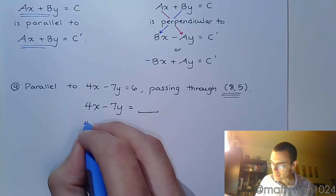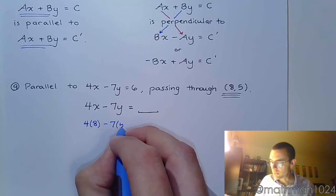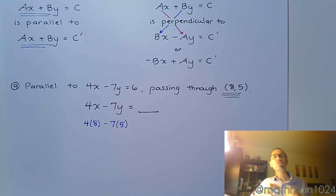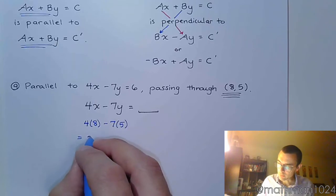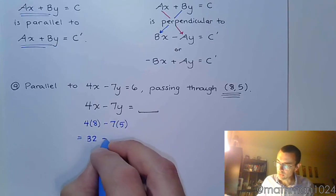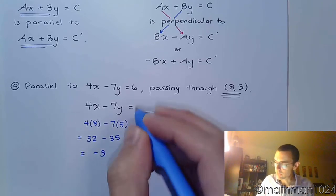And we've seen this before. If I just plug in 8 for x and 5 for y, that's going to force my hand and tell me exactly what that number is. And there's no guessing involved. So if I work this out, we get 32 minus 35 and we get negative 3.